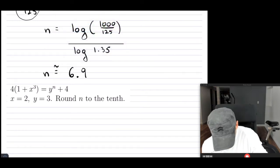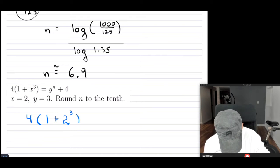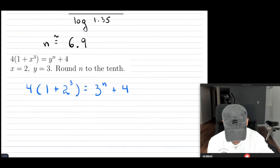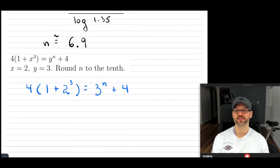Switch color. So I have 4 times (1 plus x) is 2. So 2, this is cubed. Equals y. Sorry, y is 3. So 3n plus 4. So this is what I have. So I have to simplify this before I do any kind of solving for this n.